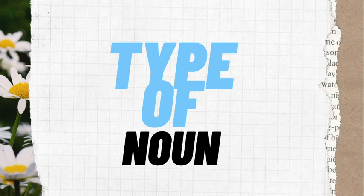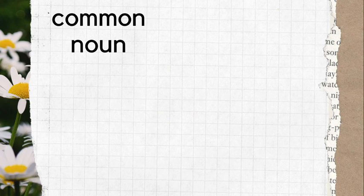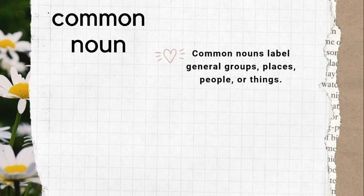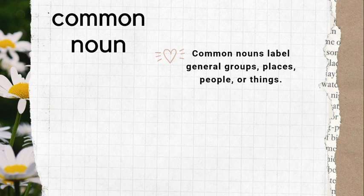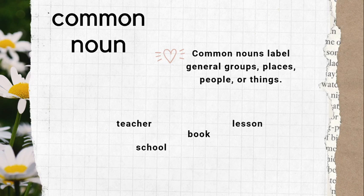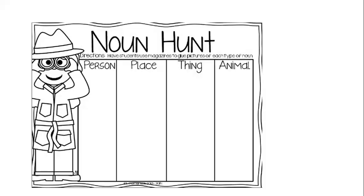Now we're going to learn about the types of noun. The first type is common noun. Common nouns label general groups, places, people, or things. The examples I just mentioned — teacher, school, book, lesson, address — all those nouns are common nouns.